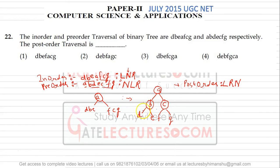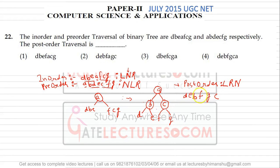According to B, we access D first, then we access the right child E, then we access root B. Now the left subtree of A is finished, so we go to the right subtree. The right subtree has F, then G, then C. We apply post-order traversal on this: first access F, then access left, then access right, then access root. So left and right are finished, and now we have root A.